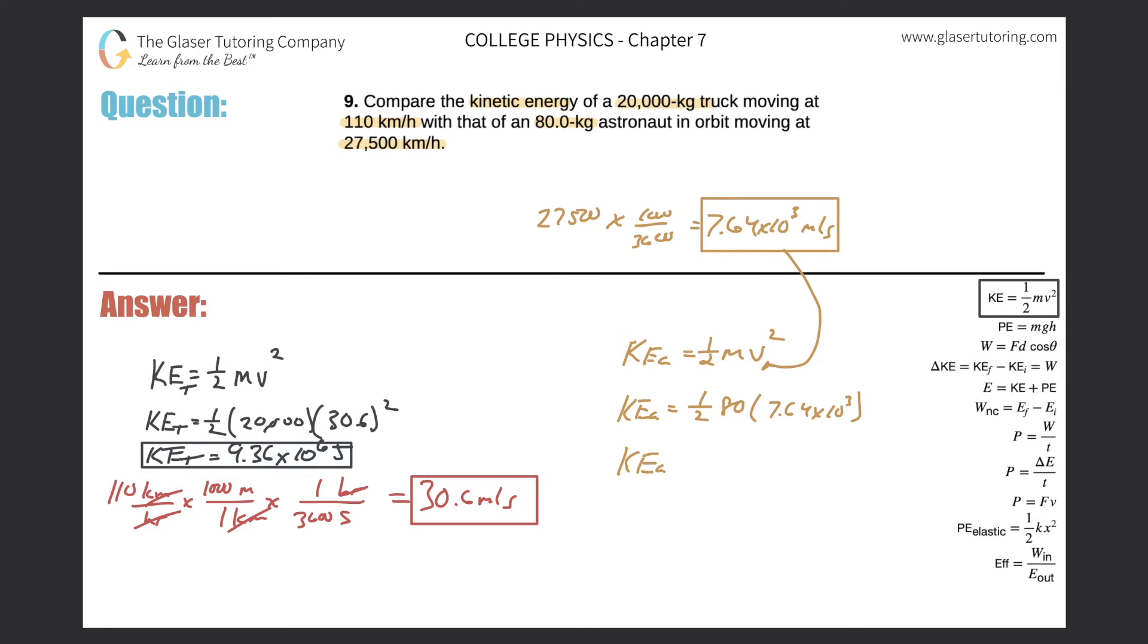So the kinetic energy now of the astronaut will be, so 0.5 times 80 times 7.64 times 10 to the third, and that's squared. Big number, right? So 2.33 times 10 raised to the, I'm going to count this one out. I don't know why it didn't put into scientific for me. So we got 6. Looks like 9, right? Times 10 to the 9, and that's in joules.